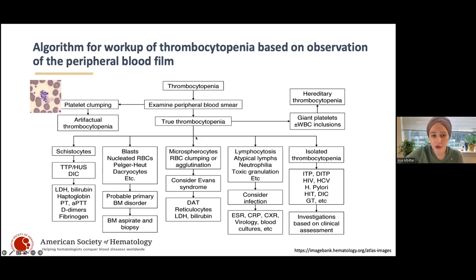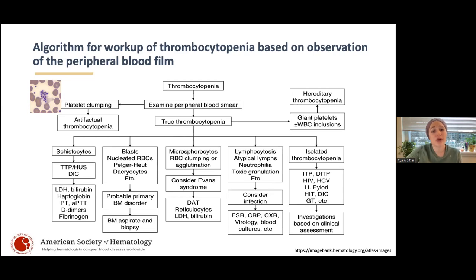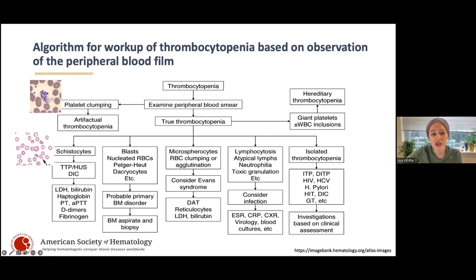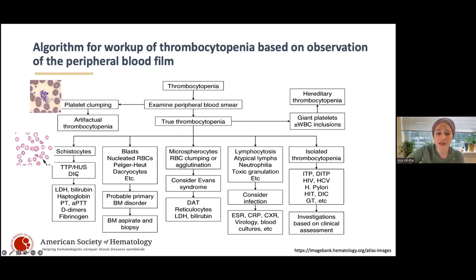There are a couple of ways of approaching true thrombocytopenia. I'm going to go over the microscopic approach, because it's important to look under the scope and see what's going on in a blood smear. If you see schistocytes — fragmented RBCs — then at that time you're worried about TTP, HUS, or DIC, and you order those panels.